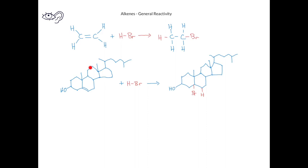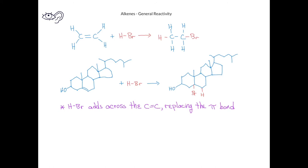Let's look at another molecule that has a double bond and see how that molecule reacts with hydrogen bromide as well. This molecule is a steroid known as cholesterol. When we react it with hydrogen bromide, we notice that the carbon double bond that was in place has now reacted and a bromine has been added to one of the carbons and a hydrogen has added to the other. In general, what we see in these reactions is that the hydrogen bromide atoms are added across the carbon-carbon double bond, replacing the pi bond.